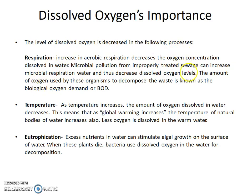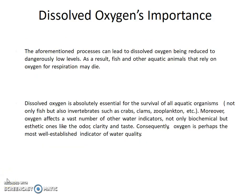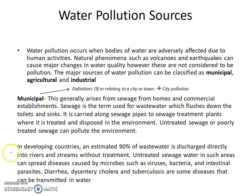Eutrophication is a combination of factors where excess nutrients stimulate algal growth. The algae respire, which decreases oxygen content. That decreased oxygen content makes it difficult for plants, fish, and other organisms to thrive, resulting in the death of aquatic life. Furthermore, the algal bloom covering the surface of the water can also impact photosynthesis, and the plants could then die as well.